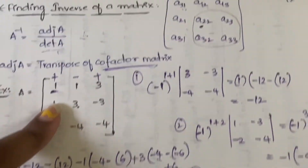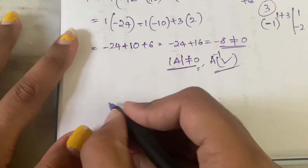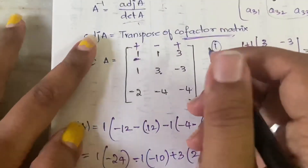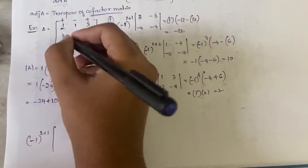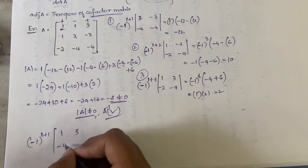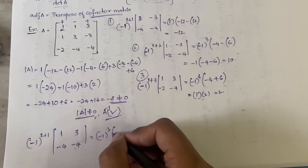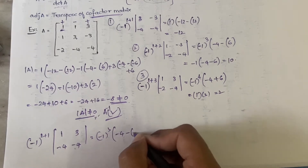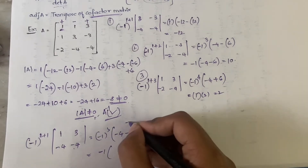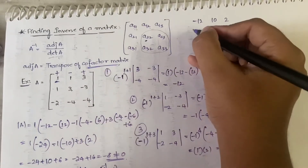For the fourth element at position (2,1): (−1)^(2+1) times the submatrix obtained by closing row 2 and column 1, giving elements 1, 3, −4, −4. That is (−1)³ × (1×(−4) − (−4×3)) = −1 × (−4 + 12) = −1 × 8 = −8. So the fourth element is −8.